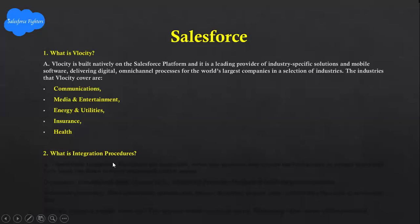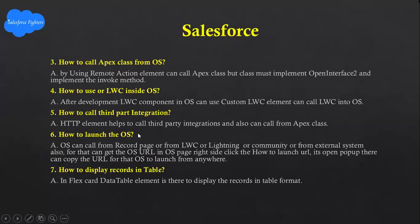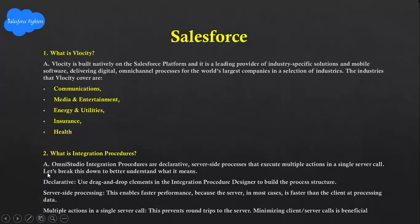Next question: What is the integration process? OmniStudio integration processes are declarative, server-side processes that execute multiple actions in a single server call. Declarative means drag-and-drop elements in the integration process designer to build process structures.